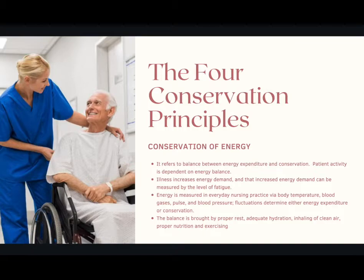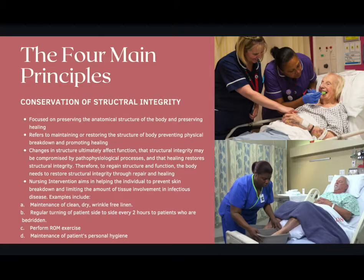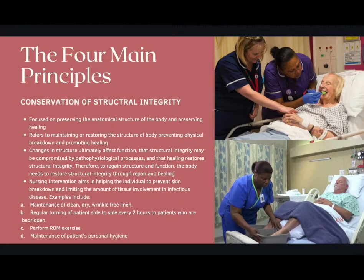Next, here are the four main principles of conservation of structural integrity. It is focused on preserving the anatomical structure of the body and preserving healing. It refers to maintaining or restoring the structure of the body, preventing physical breakdown, and promoting healing. Changes in structure ultimately affect function; structural integrity may be compromised by pathophysiological processes, and healing restores structural integrity. Therefore, to regain structure and function, the body needs to restore structural integrity through repair and healing. Nursing intervention aims at helping the individual prevent skin breakdown and limiting tissue involvement in infectious disease. Examples include: A. Maintenance of clean, dry, wrinkle-free linen. B. Regular turning of patient side to side every two hours for bedridden patients. C. Perform ROM exercise. D. Maintenance of patient's personal hygiene.